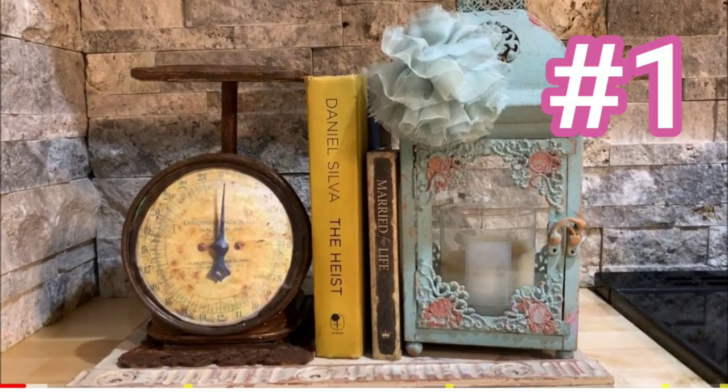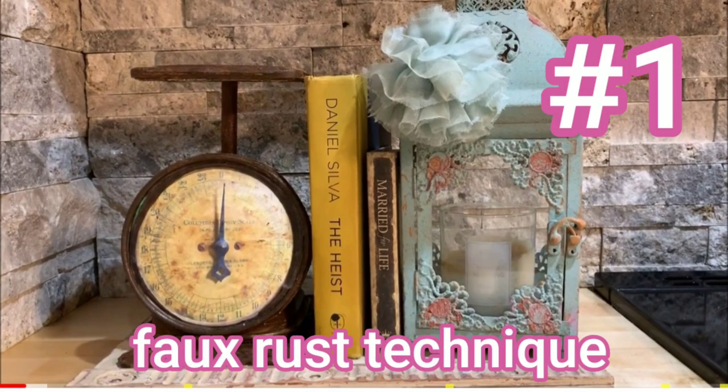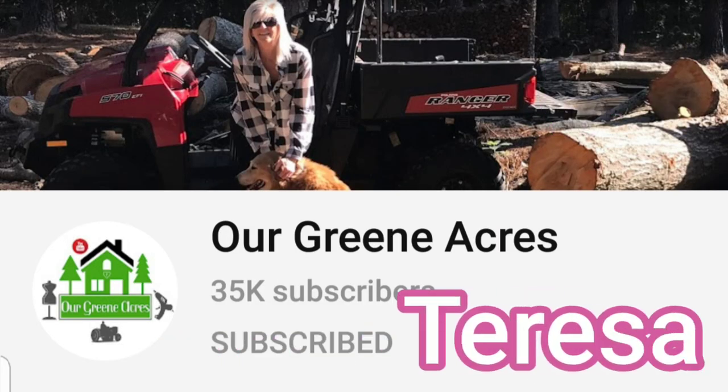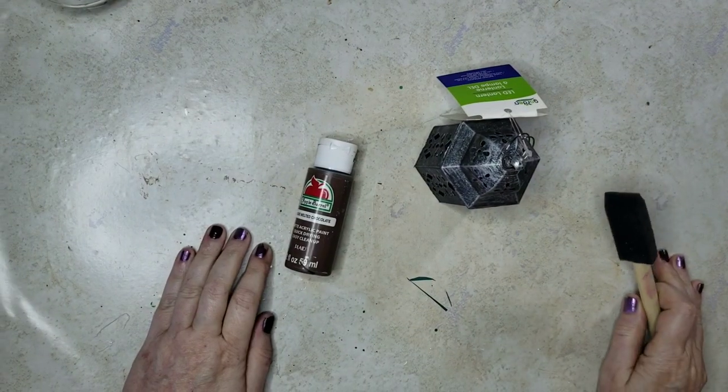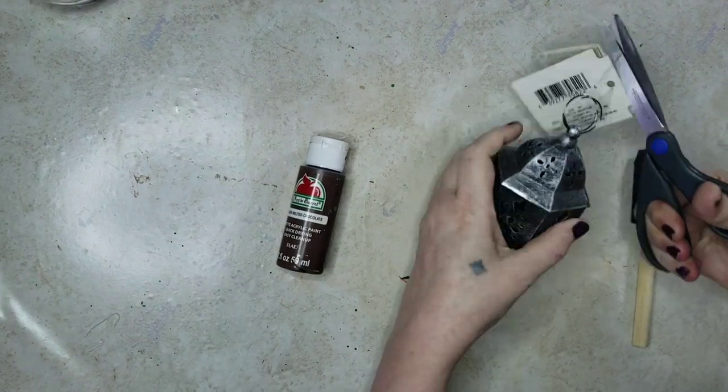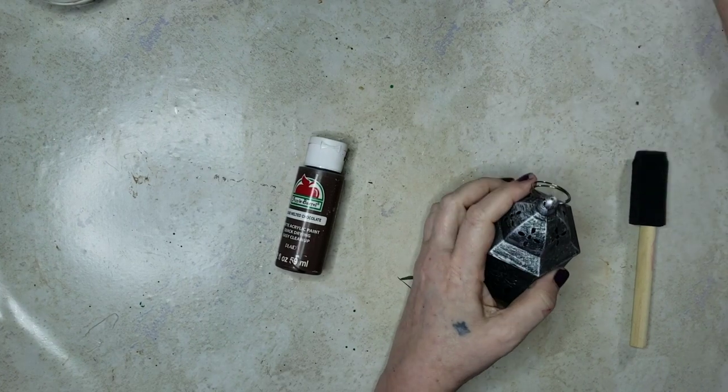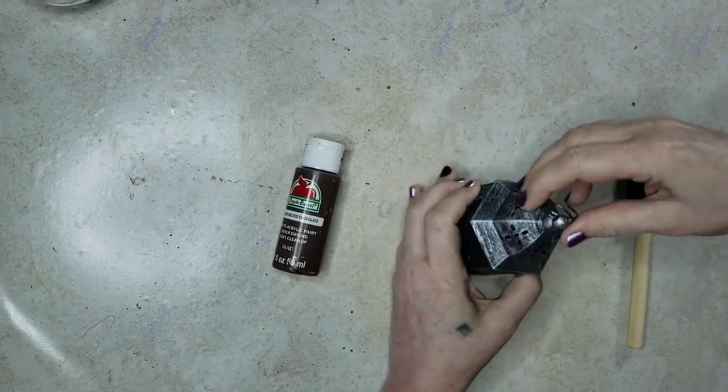So number one, I'm trying the faux rust technique that was posted by Teresa of Al Green Acres. I'm going to be painting this little lantern from Dollar Tree to look rusty. First thing I'm going to do is take that ring off the top.